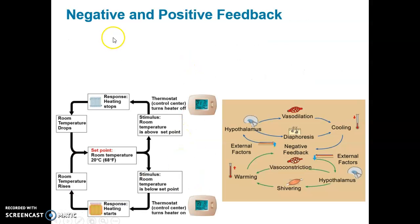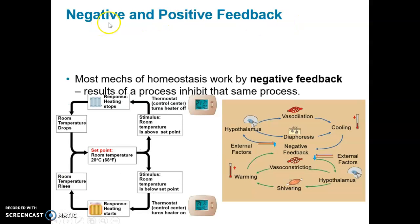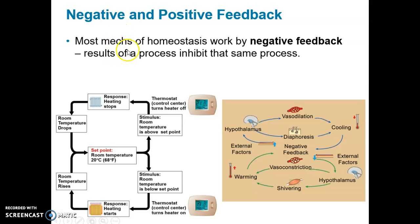The mechanisms operate by a couple of feedback loops. One type is negative feedback and the other type is positive feedback. We'll start with the negative — that's the most common. Most mechanisms of homeostasis work by negative feedback mechanisms, such as those governing body temperature, blood salt concentration, and blood sugar levels.